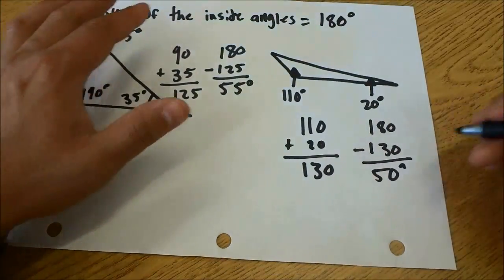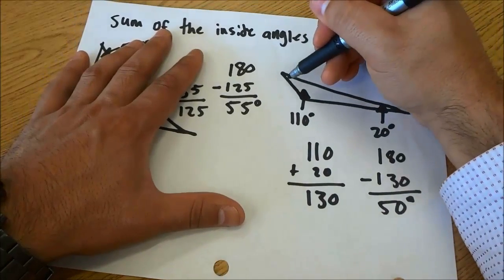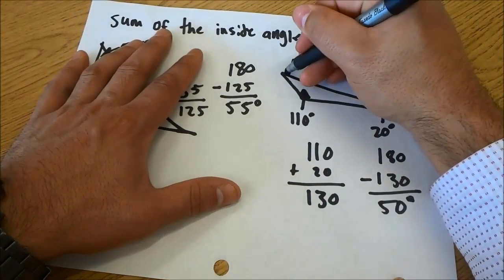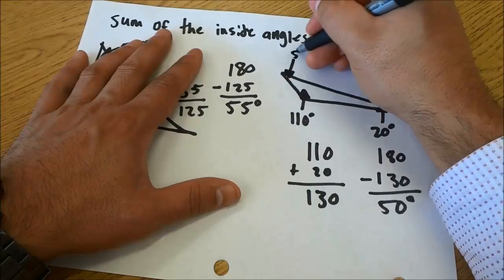And that is our answer. 50 degrees is the angle right here, the missing angle. I'm just going to draw an arrow right there and I will write 50 degrees.